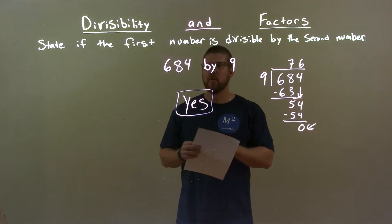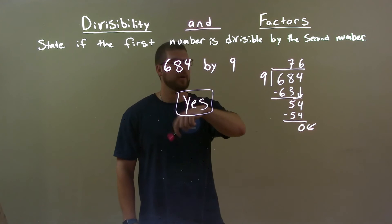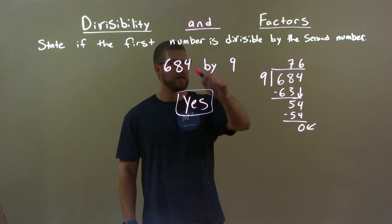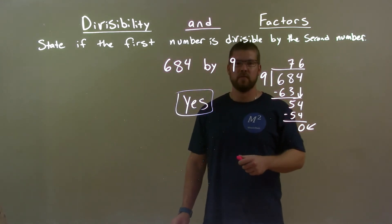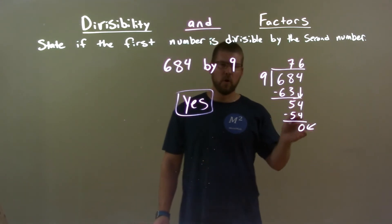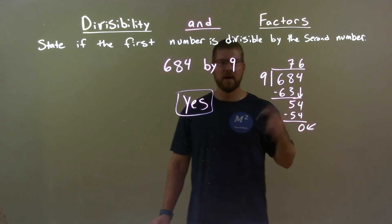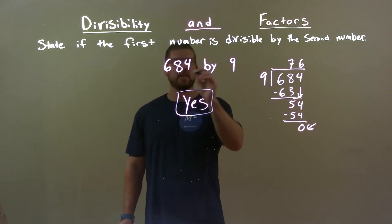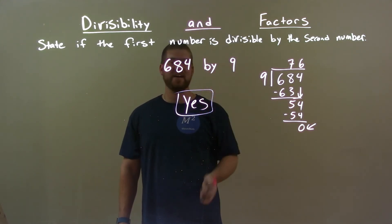Quick recap. We're given 684 by 9. Is 684 divisible by 9? Well, I did long division of 9 into 684 and got 76 with a remainder of 0. The remainder of 0 told me that it went in evenly, so 684 is divisible by 9.